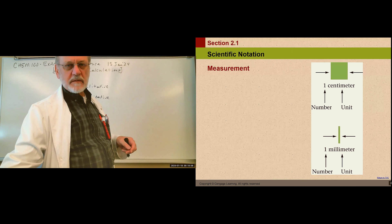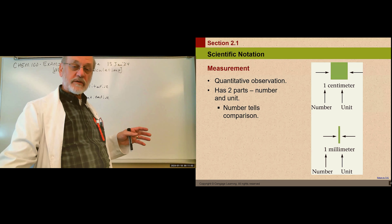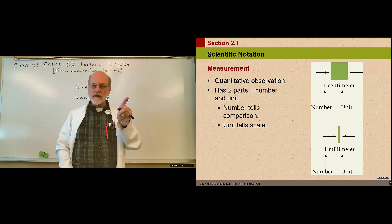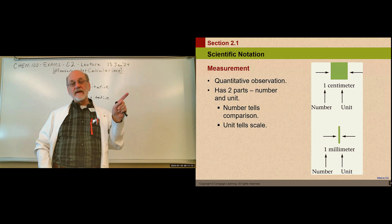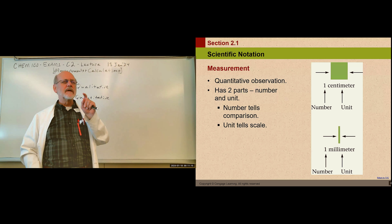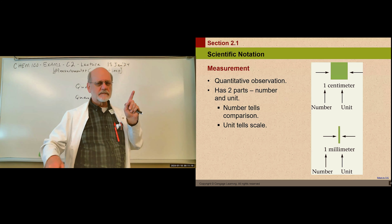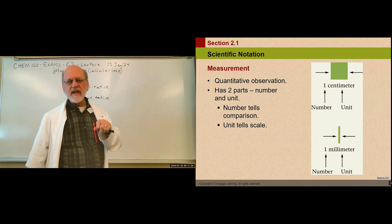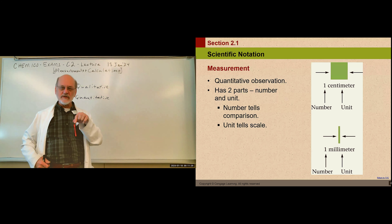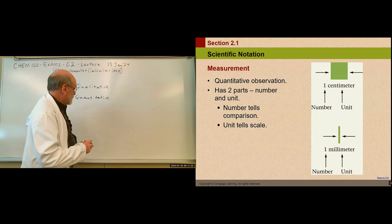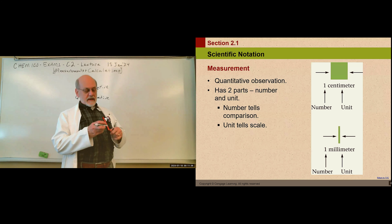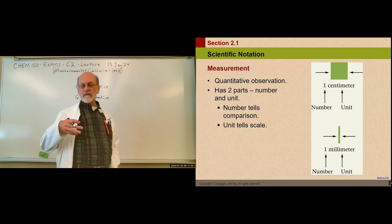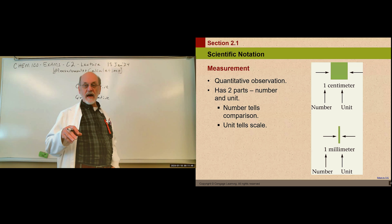In order to understand how measurement works, you have to understand that every measurement has a number and a unit of measure. It has to have a unit. For example, if I say I'll be 71 on February 25th of 2024, you just assume I mean 71 years old. But in the sciences, assumption makes an ass out of you and me — so we don't assume.